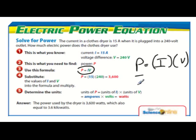Where P stands for power, I is current, and V is volts. As you can see in the example, when we find the value for power, it's going to be amperes times volts which equals watts.